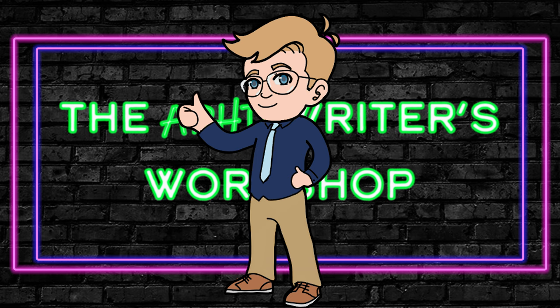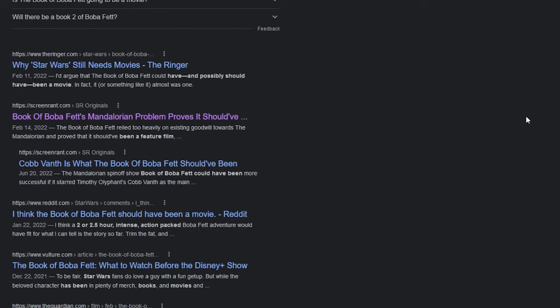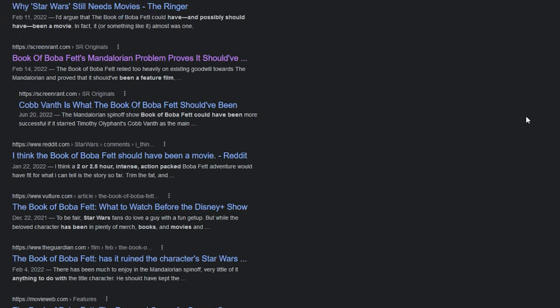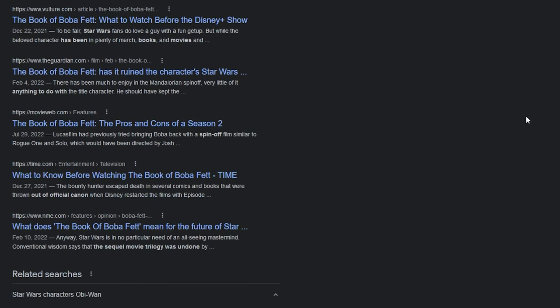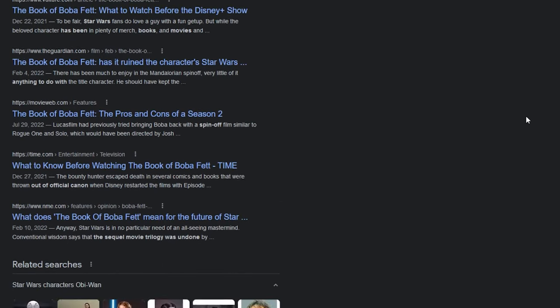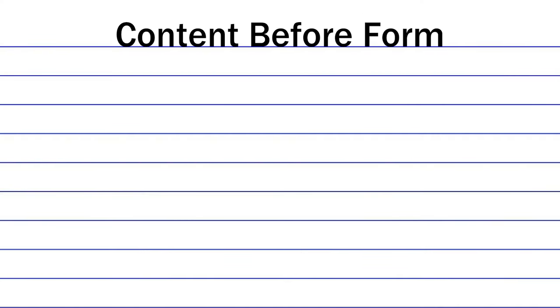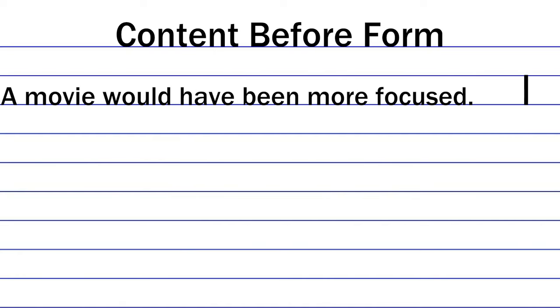Now let's move on to some other examples of how form can mirror content. If you've seen any of the Disney Plus Star Wars series lately, you might have seen some arguments that they should have been movies instead. There are a variety of different arguments in favor of making these series into movies, but notably because the stories could have been more focused in a movie instead of a series, where audiences felt like there was a lot of narrative fluff in each episode.